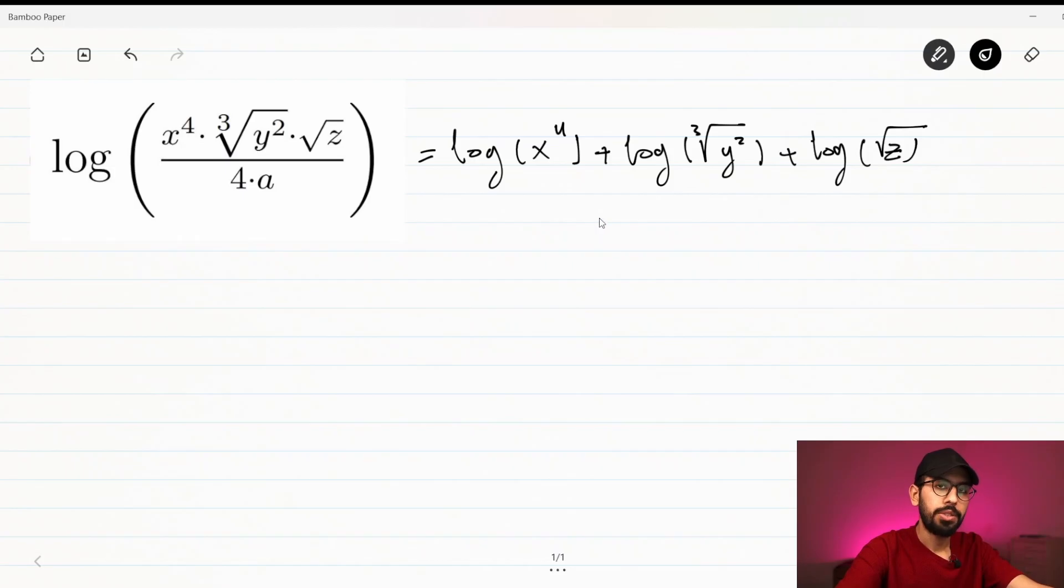Now by using the second rule of logarithm, which says that when we have a division, the terms in the denominator become negative when we expand the logarithm. So the result will be minus log 4 and minus log a.